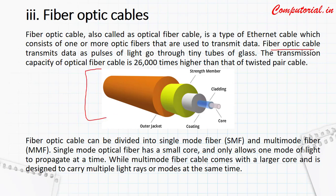Fiber optic cable transmits data as pulses of light going through tiny tubes of glass. Data travels in the form of light — little pulses of light in the glass tube. The transmission capacity of optical fiber cable is 26,000 times higher than twisted pair cable.